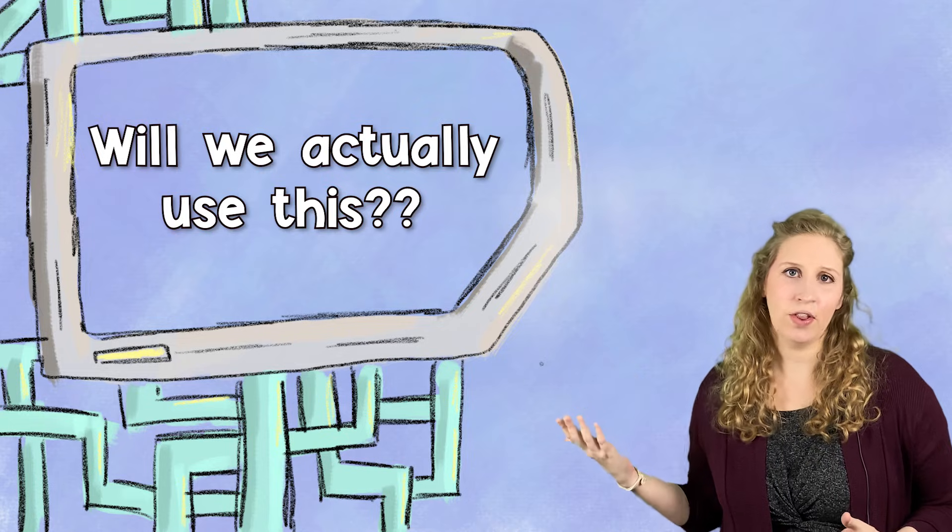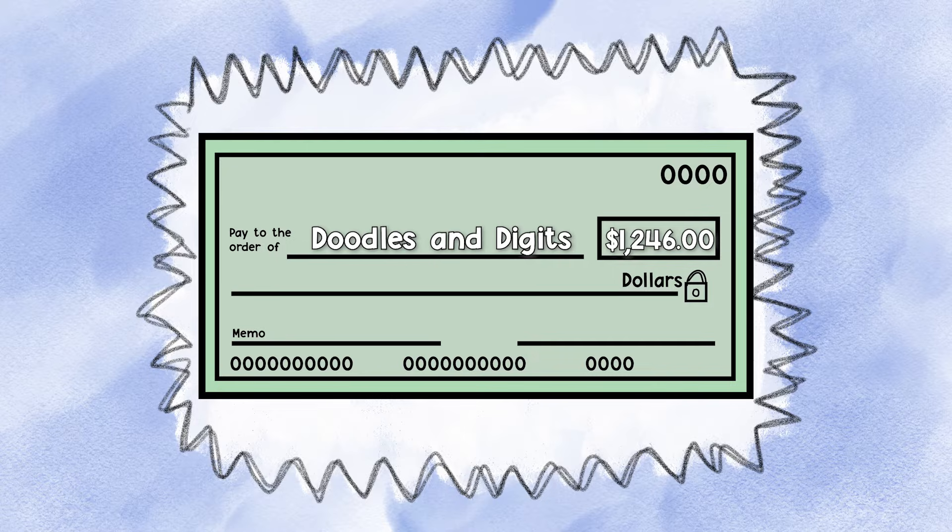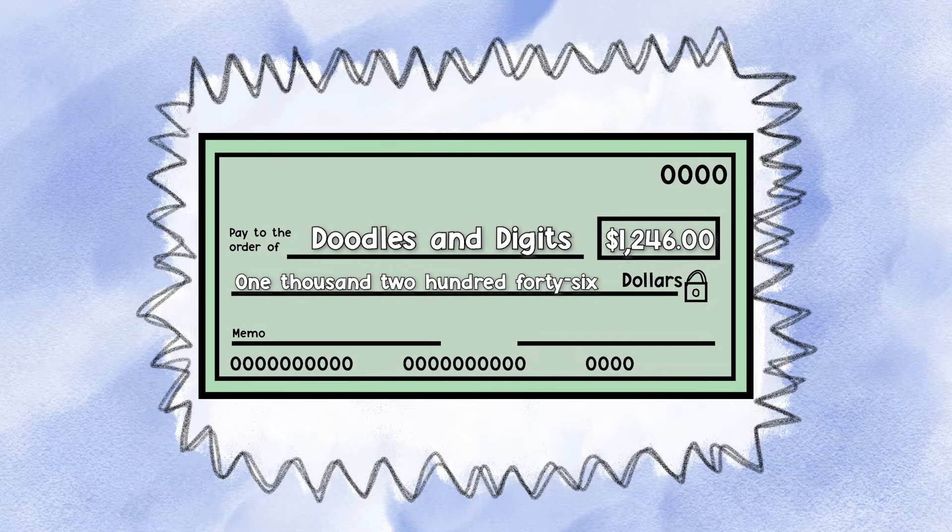Where do we actually see this in real life? The most common way you will probably use word form is writing a check. Check out this check right here. It's written for $1,246. You'd have to write this out in word form if you were writing this in real life.